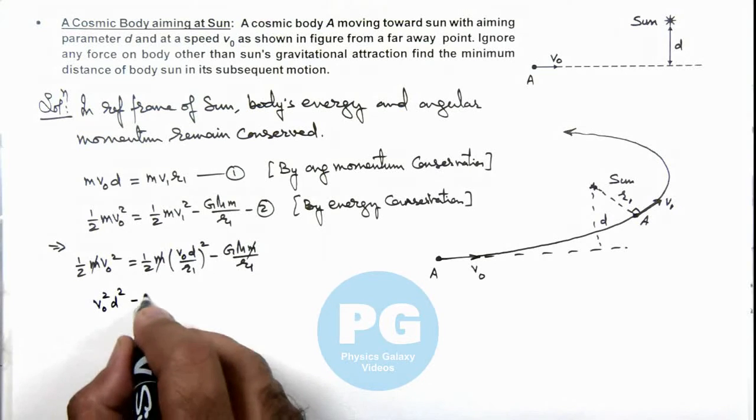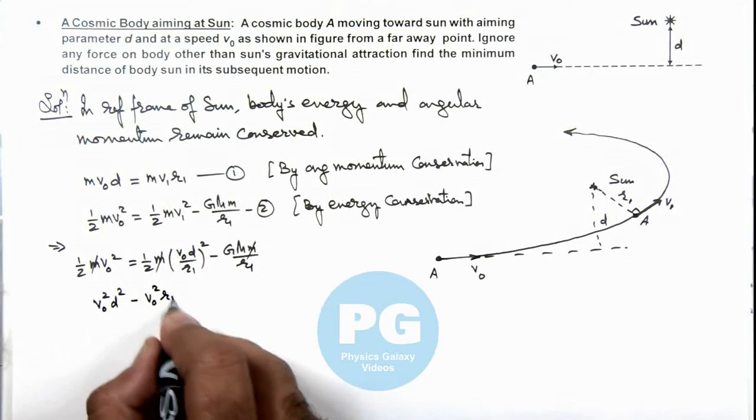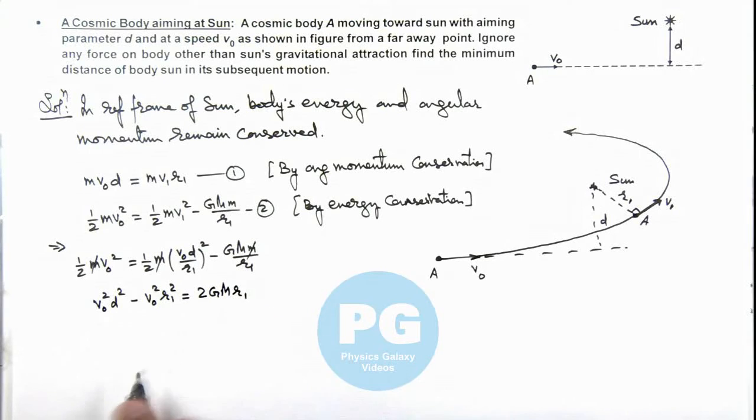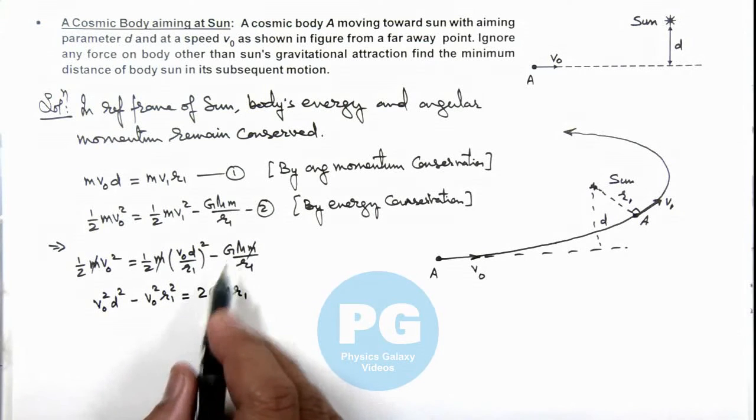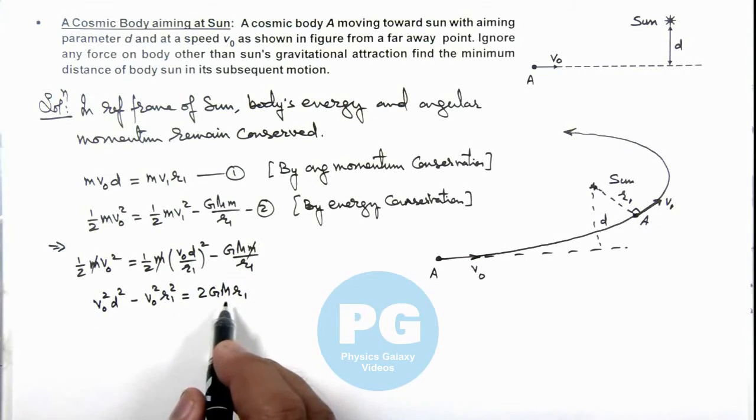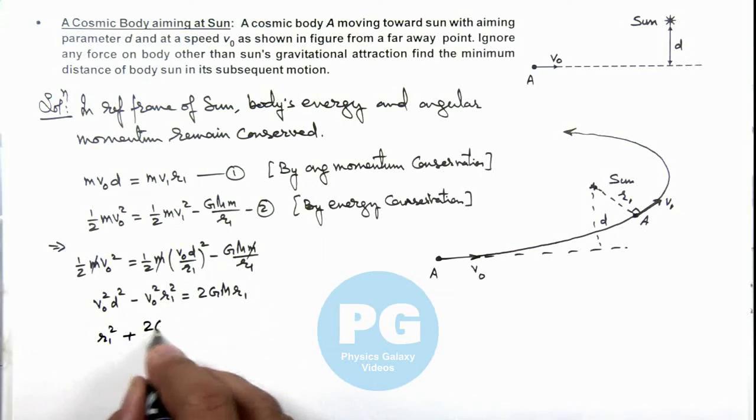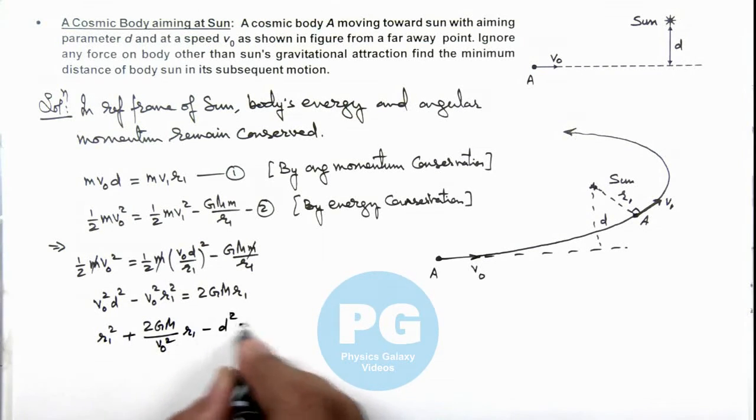Minus v not square r1 square is equal to 2 G M r1. You can see this is what we are getting after simplifying, and this can be rewritten in form of a quadratic equation in r1 as r1 square plus 2 G M by v not square r1 minus d square is equal to 0.